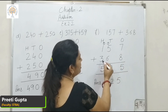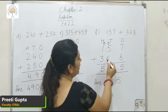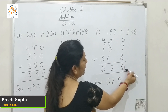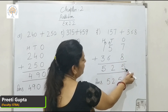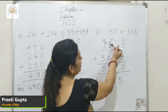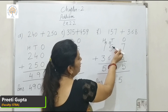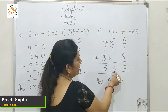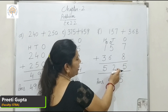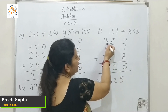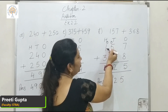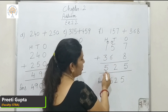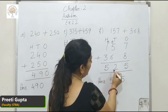I repeat: 157 plus 368. 7 plus 8 is 15 — write 5 here, carry 1 here. 5 plus 1 is 6, and 6 plus 6 is 12 — write 2 here and carry 1 here. 1 plus 1 is 2, and 2 plus 3 is 5. So our answer is 525.